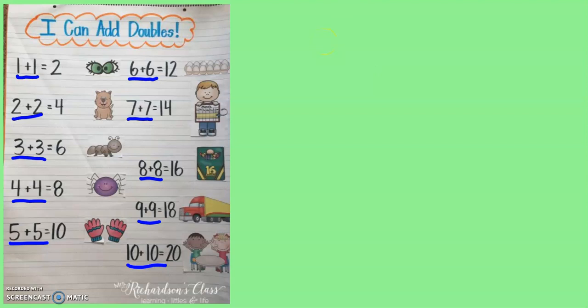Now as a second grader it is very important that we practice these doubles. By the end of the year our goal is to know all of these very quickly. So let's read through them together. One plus one equals two. You probably already knew that one. Two plus two equals four. You also probably knew that one. On the picture we have two paws and two paws to give us four paws on the dog.